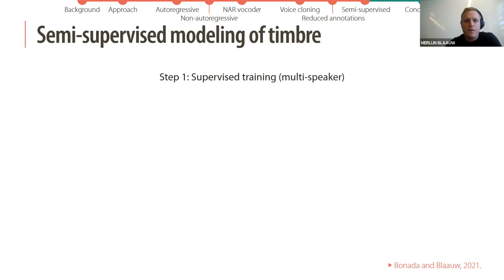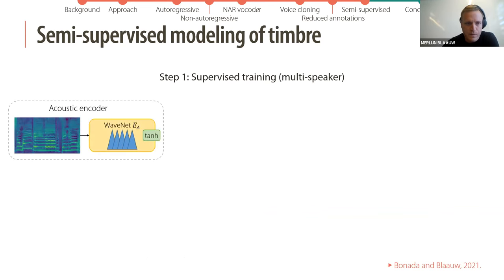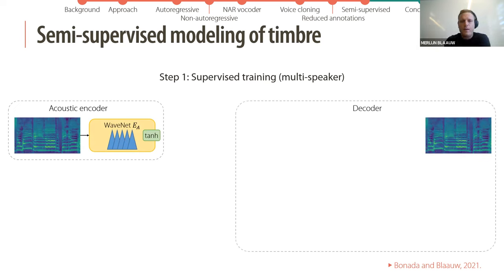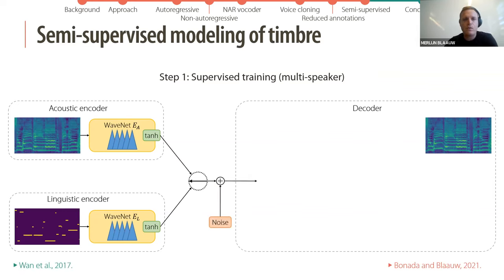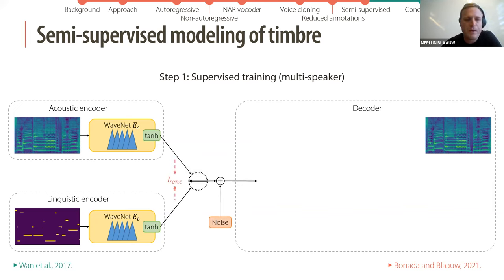The approach is multi-step. The first step is supervised training with a multi-speaker dataset. We have an acoustic encoder — a non-causal WaveNet — and a decoder that produces the input acoustic features with a reconstruction loss. We also have a linguistic encoder that takes the phonetic sequence as a one-hot encoding — also a non-causal WaveNet. In the bottleneck of this auto-encoder setup, we have a random switch between the two encoders and a loss between the two codes, so the codes should be as similar as possible while the decoder can reconstruct using either.